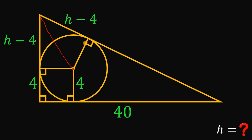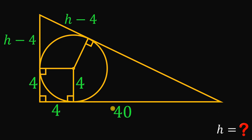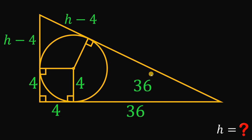We have a right triangle here, and using the HL postulate, we can say these two right triangles are congruent. So if this side is h minus 4, the other side must also be h minus 4. We also know this side length is 4, so the whole segment must equal 40. Therefore, 40 minus 4 means this segment equals 36, and since it is 36, the other segment is also 36 units.